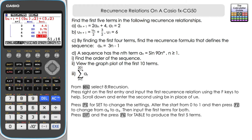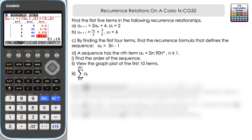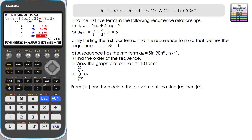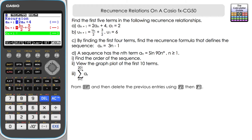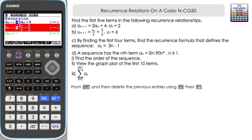That's quite straightforward for generating terms in a recursive relationship. Let's look at part C: by finding the first four terms, find the recurrence formula that defines the sequence A_n = 3n − 1. We're given an nth term this time. I'm going to delete the previous entries using F2 and F1 so we can use the A_n slot afresh.